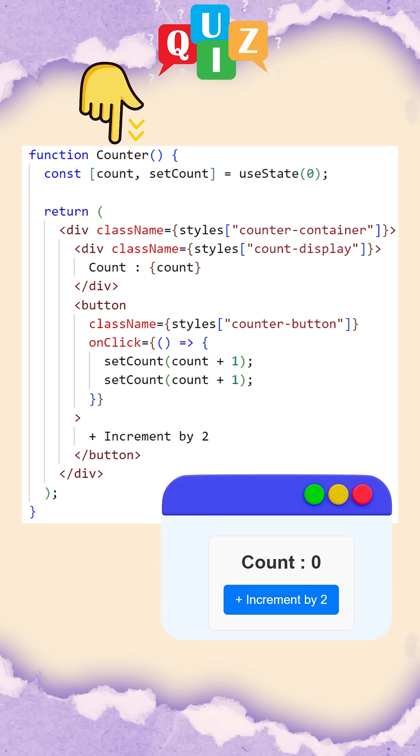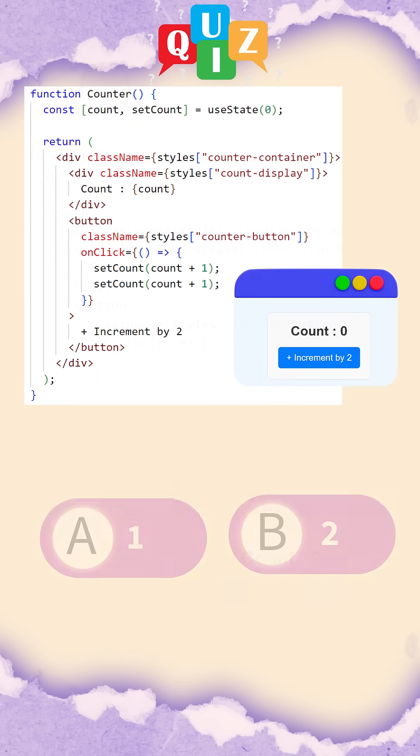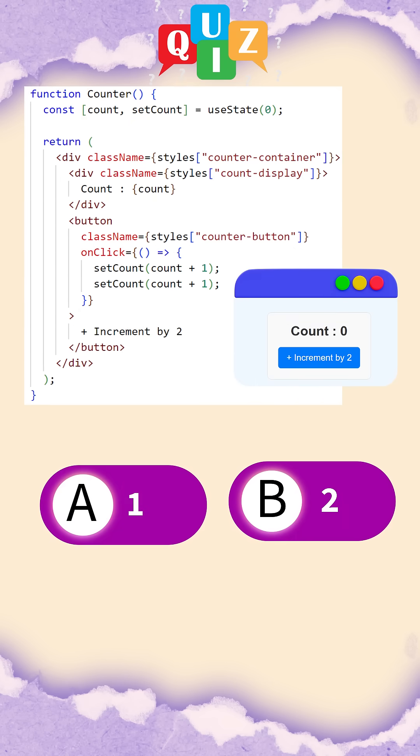So here is the question: when you click this button once, what will be the count value? Think about how React handles the state updates inside the event handlers and let me know in comments.